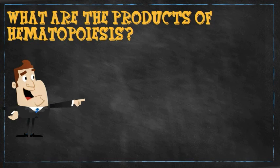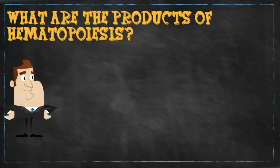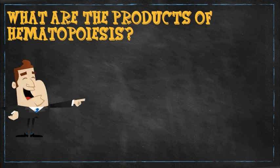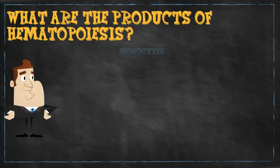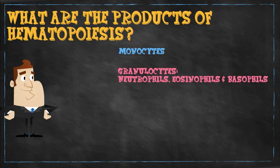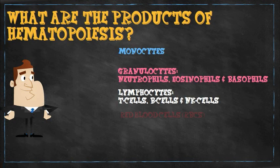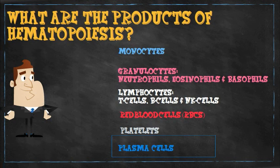So what are the products of hematopoiesis? Well, these include monocytes, granulocytes, lymphocytes, red blood cells, platelets, and plasma cells. Plasma cells are not typically seen in the blood, as was noted earlier.